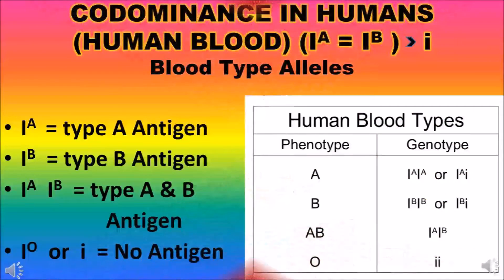Co-dominance in humans. Here I will explain co-dominance with a human blood example. As we all know, human beings have 4 types of blood groups: A, B, AB, and O.